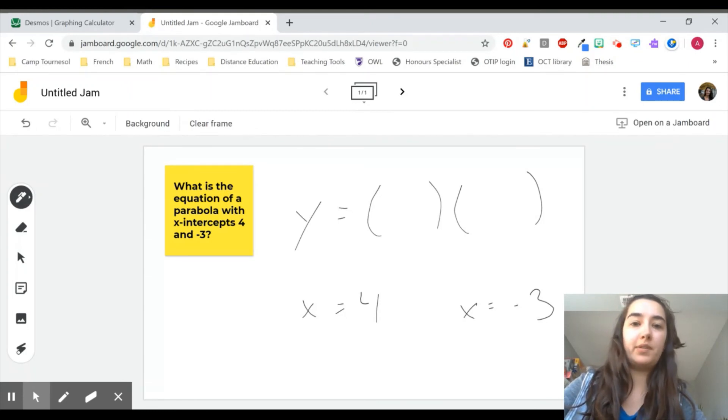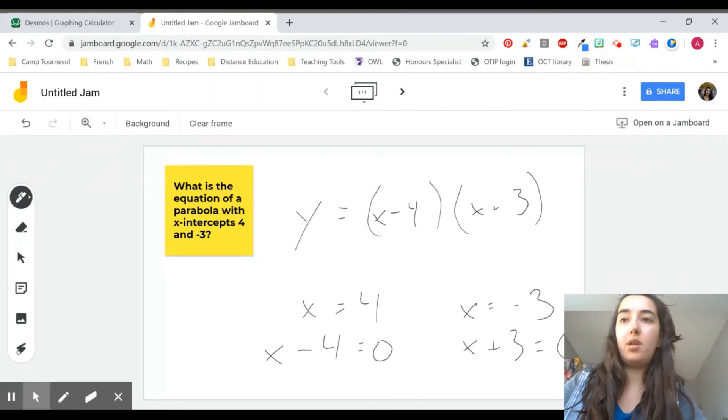In order to find what goes in each of these brackets, you might say, okay, let's rearrange this to be x minus 4 is 0. That's going to be what's in my first bracket. I can then rearrange my second one here to be x plus 3 is 0, and therefore that's my second bracket, x minus 4, x plus 3.